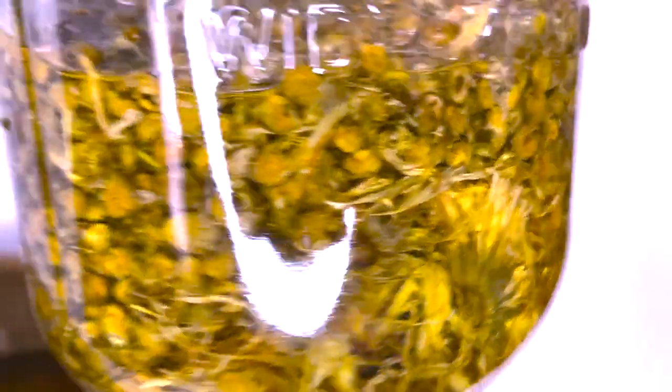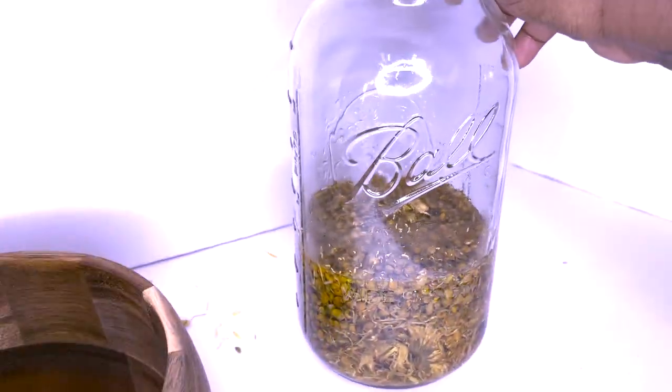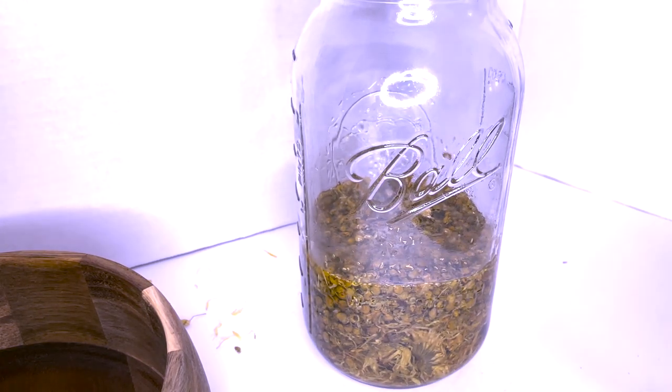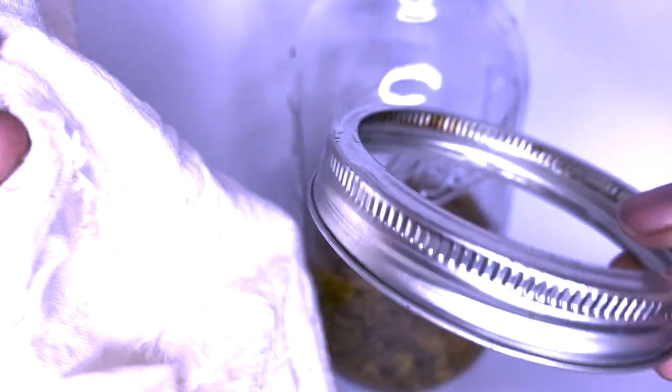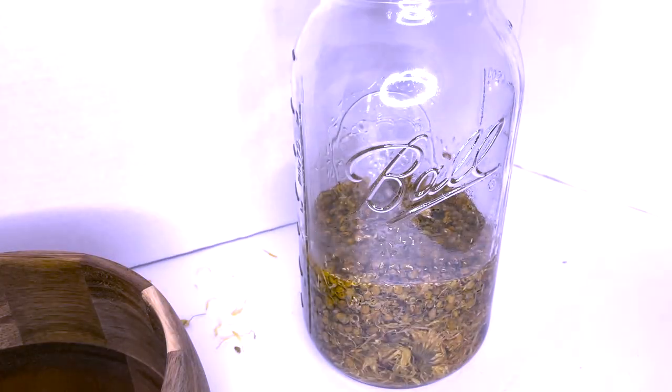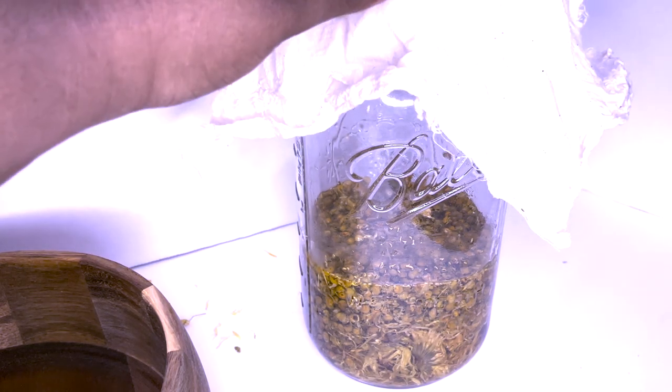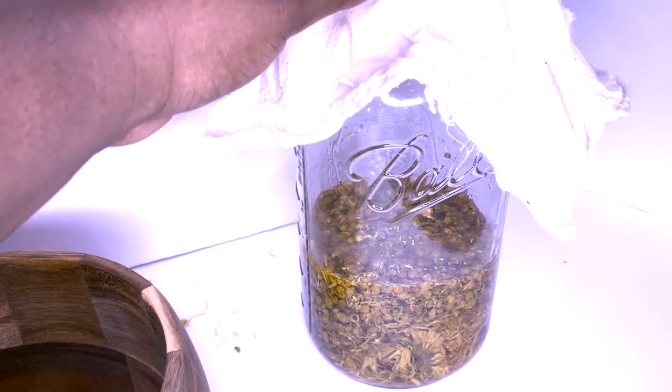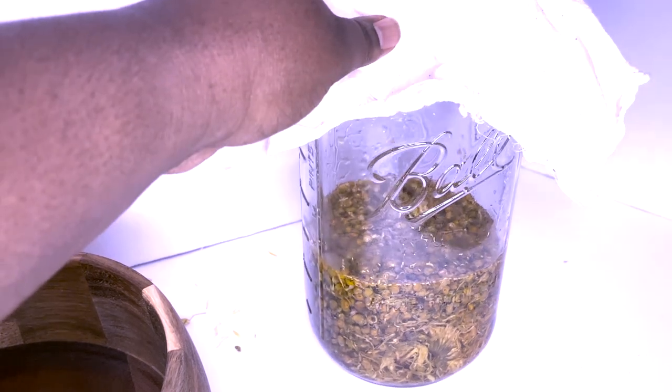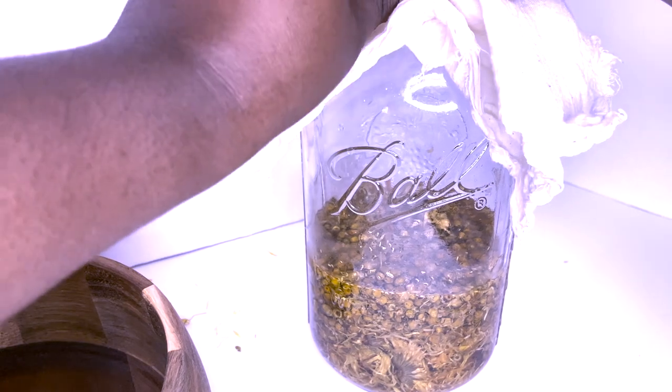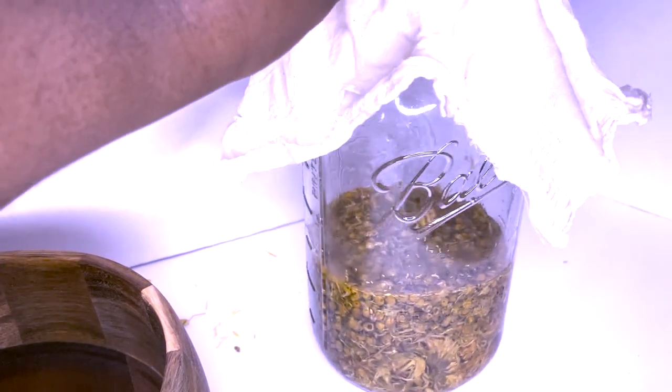After an hour and a half, we have finished our infusion. The color of the calendula and chamomile has a darker complexion now because we've completely drained all the nutrients and the color. Now we have this beautiful infused oil.